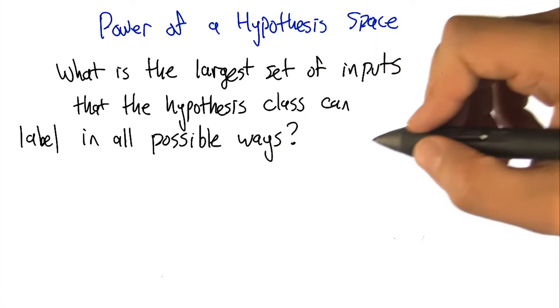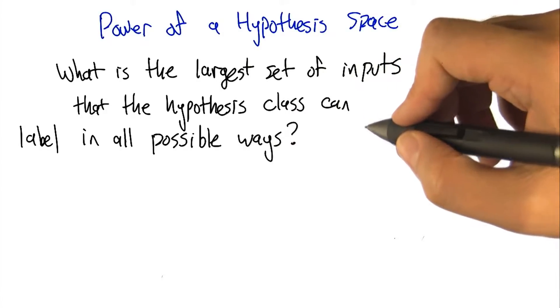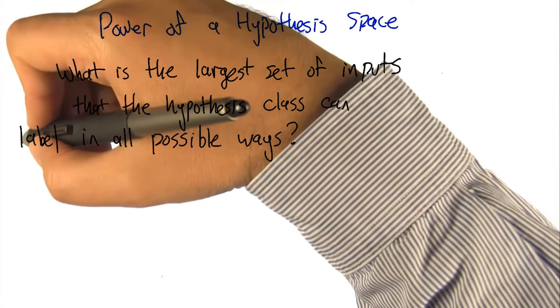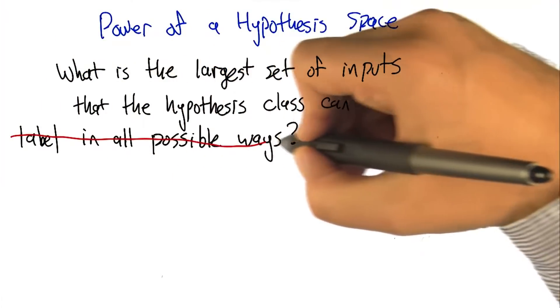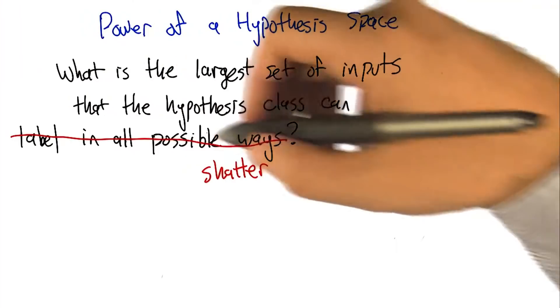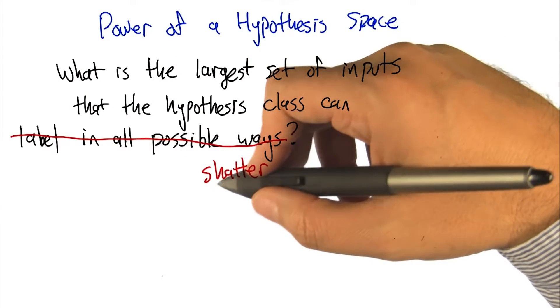So this is a concept that we're going to be able to apply in lots of different settings when we have infinite hypothesis classes. And this is really the fundamental way that it's used. It's usually a more technical sounding definition. This notion of labeling in all possible ways is usually termed shattering.